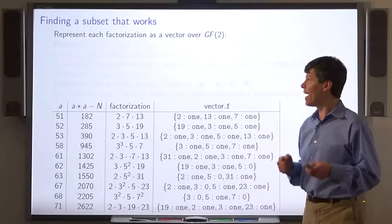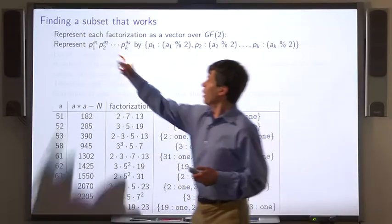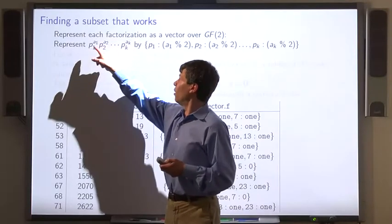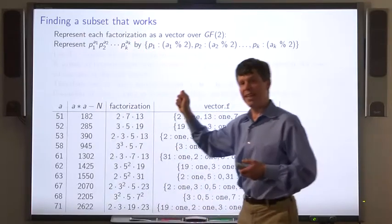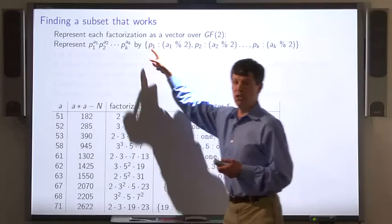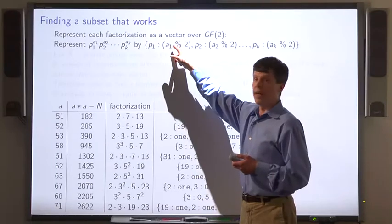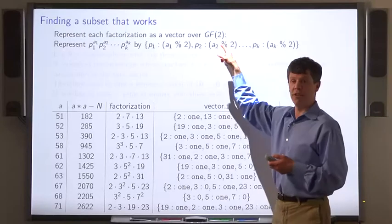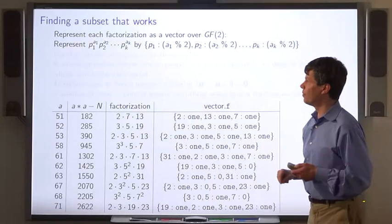We represent each factorization as a vector over GF2. So a factorization that looks like this, p1 to the a1, p2 to the a2, up to pk to the ak, is represented by a vector in which p1 maps to either 0 or 1 depending on whether a1 is even or odd. And so on.